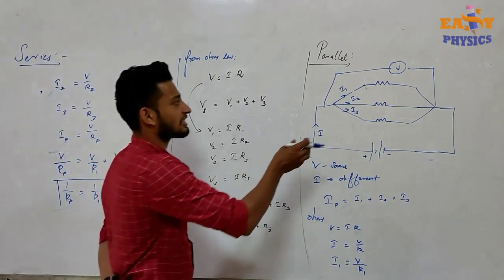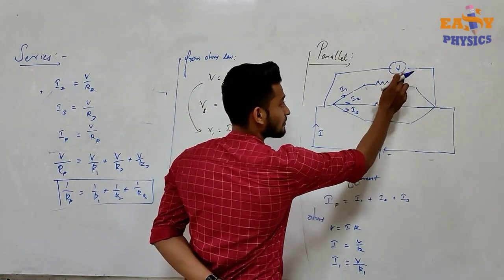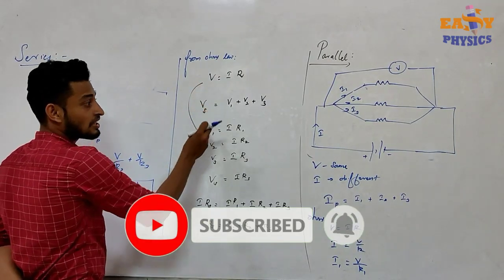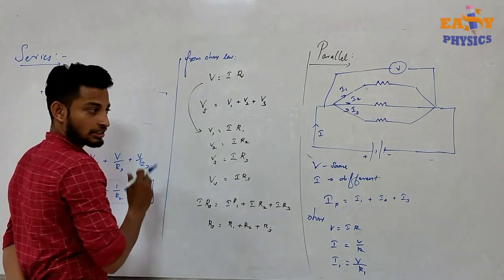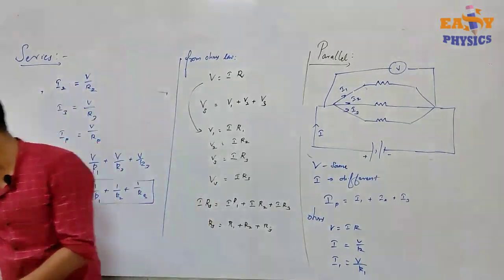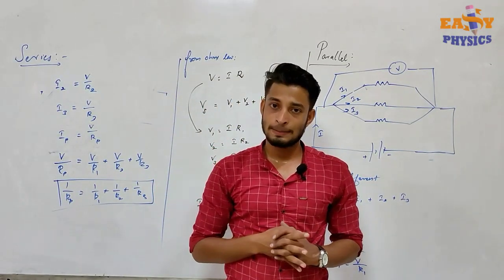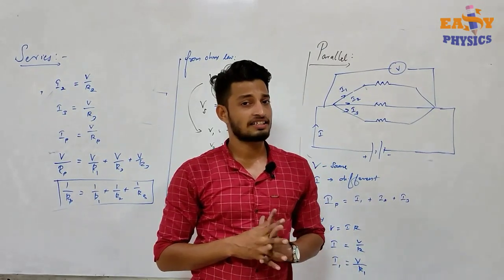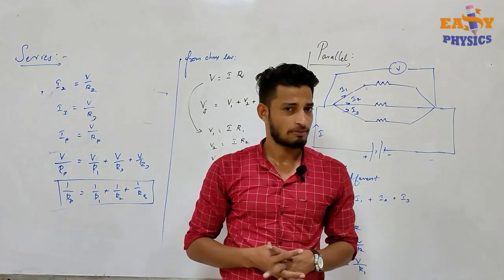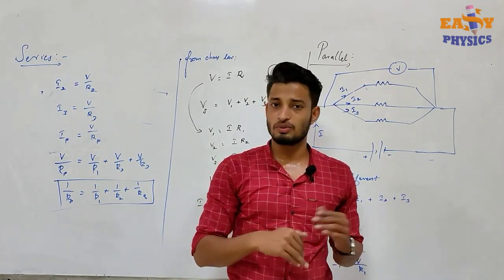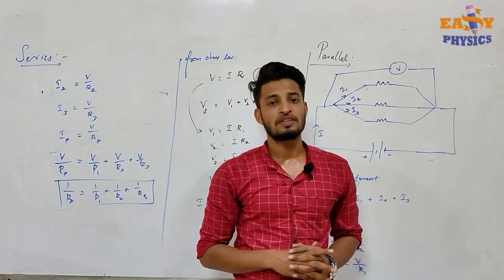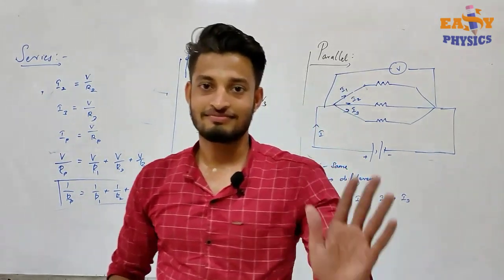That's all for this class. We talked about the series and parallel combination of resistors — the current and potential difference properties for each. Please like, share, and subscribe. Please comment below. I will see you in the next video. Namaskar.